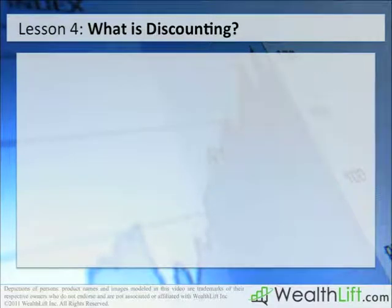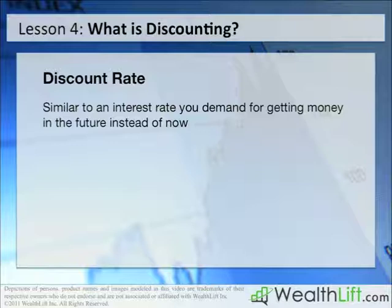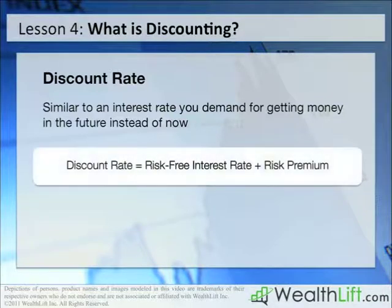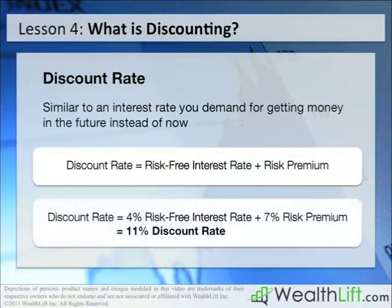This concept can be applied in more exact ways using a discount rate. A discount rate is a kind of interest rate which you demand on money promised in the future, because of the very fact that it is only a promise and not an actual payment today. It is calculated as the sum of the risk-free interest rate — usually taken as the interest rate on essentially risk-free government treasury bills — and a risk premium for the uncertainty that the promise will actually be fulfilled. For example, if the current interest rate on treasury bills is 4% and we take the risk premium as 7%, we get a discount rate of 11% per year.